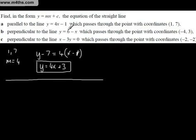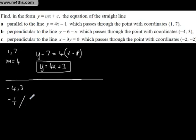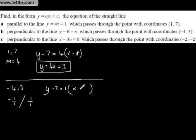We want the line perpendicular to y equals 6 minus x through the point (negative 4, 3). The gradient is minus 1, so the perpendicular gradient is positive 1. Using y minus 3 equals 1 times x minus (minus 4), which is x plus 4, we get y equals x plus 4 plus 3, giving y equals x plus 7.